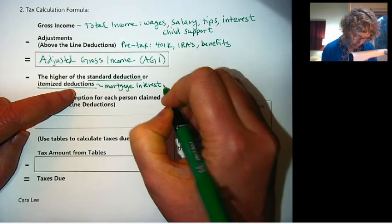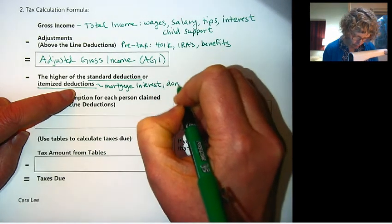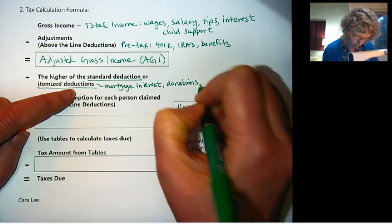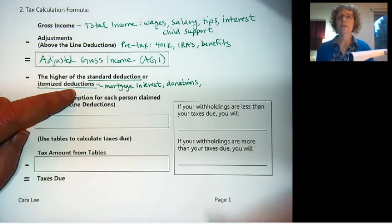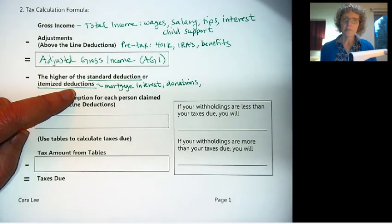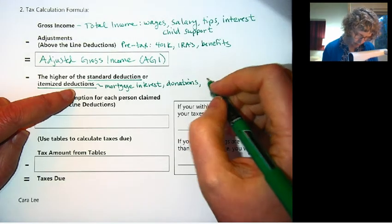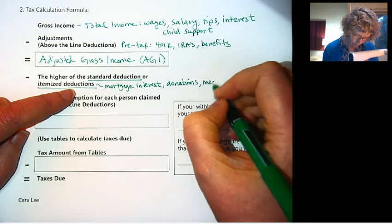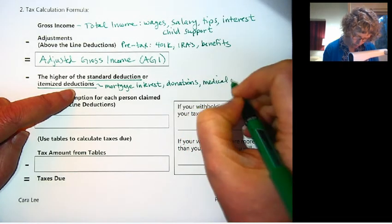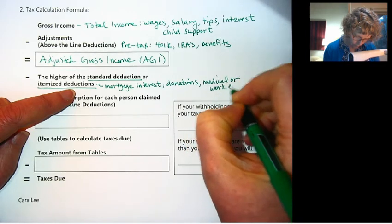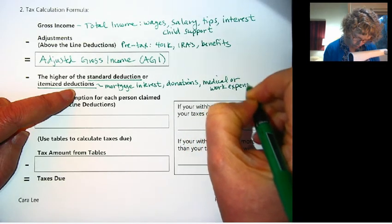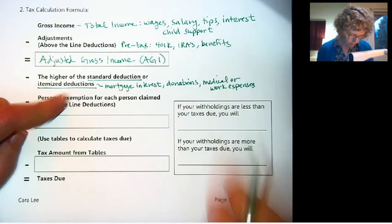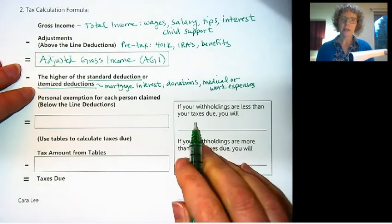Another thing you get to deduct are donations to charity. Some other things you might be able to deduct are medical expenses or work expenses, but they have to be a sizable amount. So there's qualifications for that in the tax forms or in the tax software. So those are a maybe.